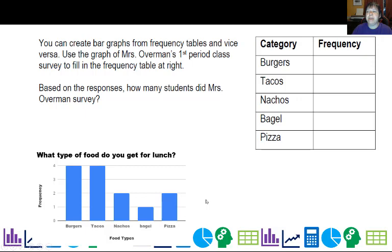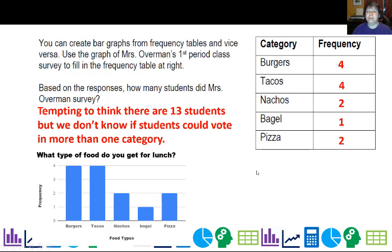We're going to take this bar graph that I had for my first period and make a frequency table. You can see I had four responses for burgers, four for tacos, two for nachos, one bagel, and two for pizza. How many students responded to my survey? It's tempting to think there are 13 students because when you add these up there are 13, but we don't know if students could vote more than one category. In reality they could only vote in one, so there are 13 students.